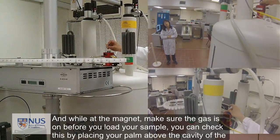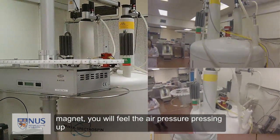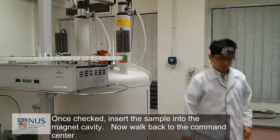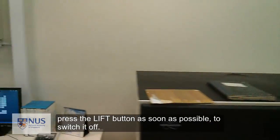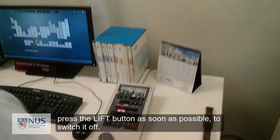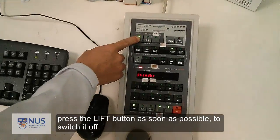While at the magnet, make sure that the gas is on before you load your sample. You can check this by placing your palm right above the cavity of the magnet. Once checked, insert the sample into the magnet cavity. Now walk back to the command center and press the lift button as soon as possible to switch it off.